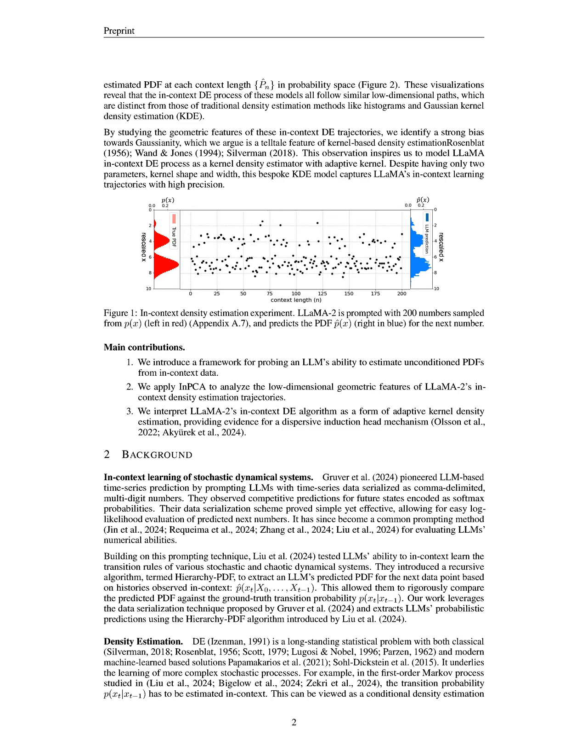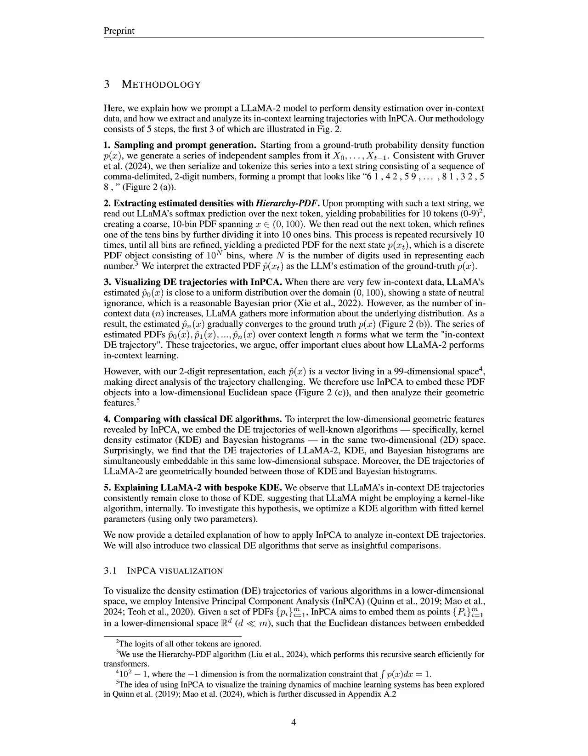The proposed in-context density estimation, DE method, involves a systematic five-step process. First, we generate a series of independent samples from a ground-truth probability density function, px, and serialize these samples into a text string of comma-delimited two-digit numbers, which serves as the prompt for the LLaMA2 model.